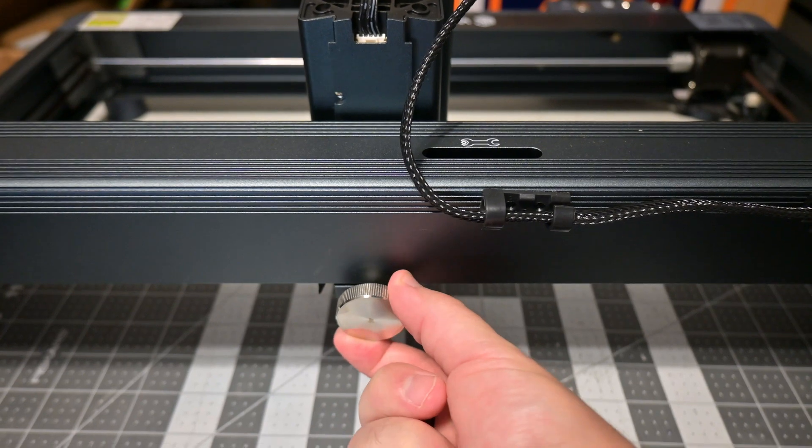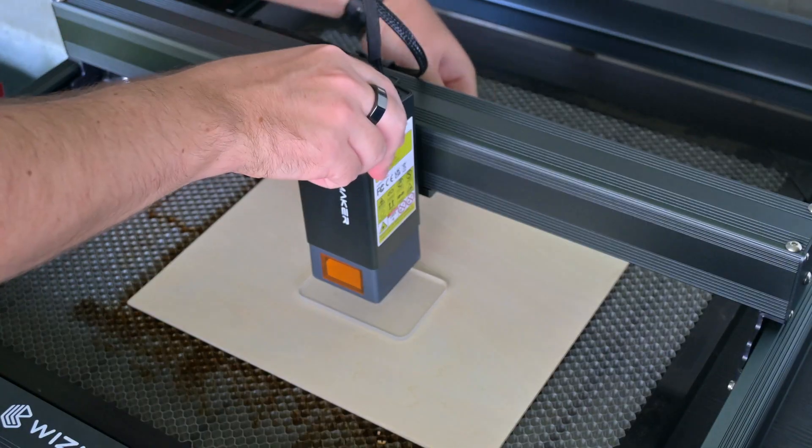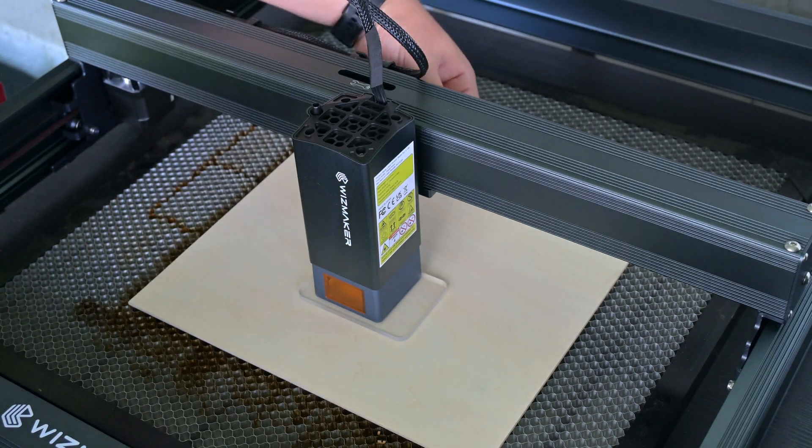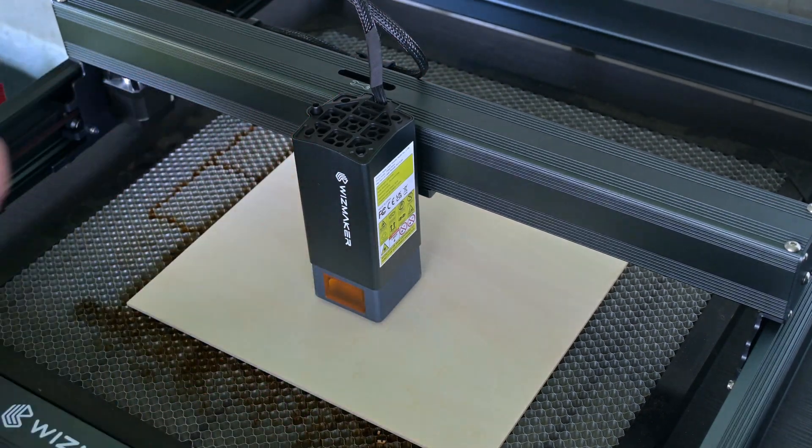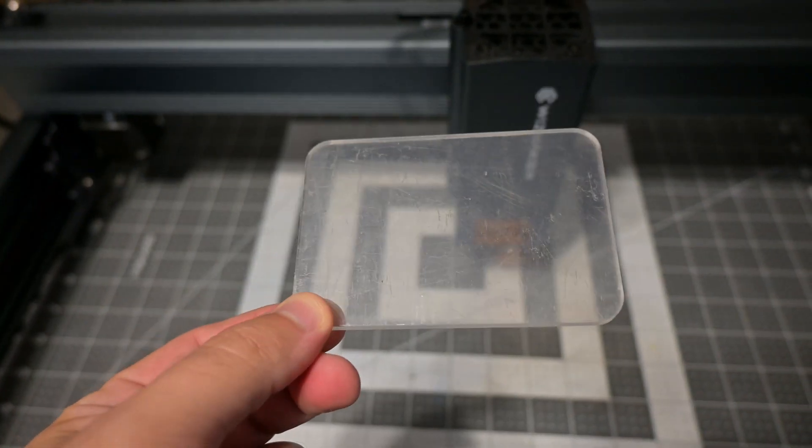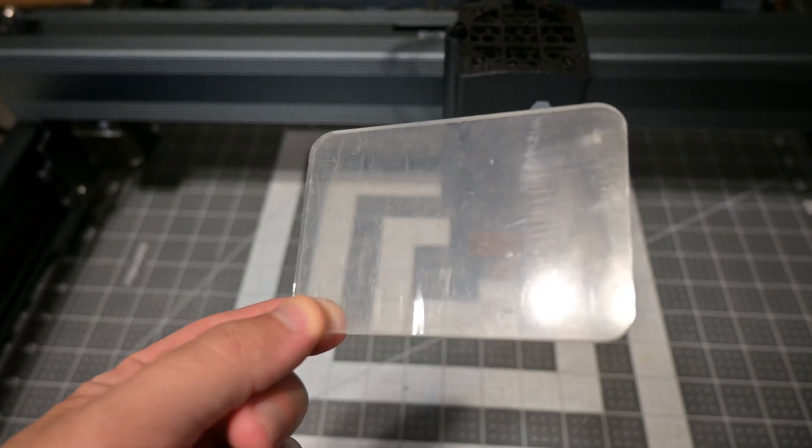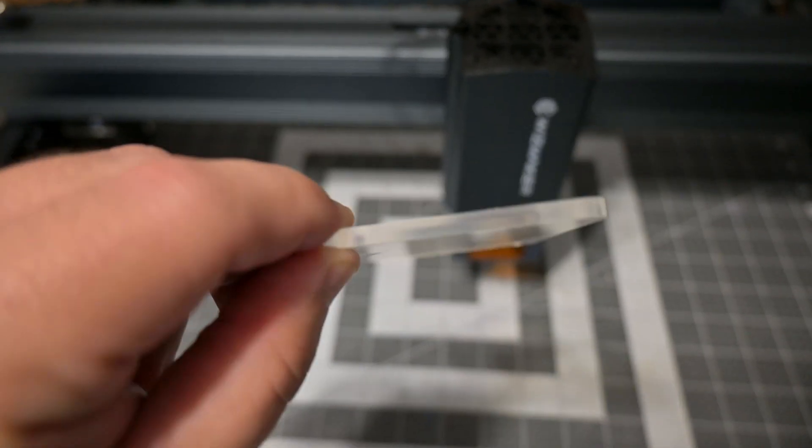The laser module is held into the x-axis with a single knob that makes it easy to adjust. Focus adjustment is done using the provided focusing spacer. Simply place the focus spacer onto your material, loosen the knob, slide the laser module down onto the spacer, and tighten the knob. It works well enough, but I do wish the focusing spacer was built into the machine. It's something that you'll need to keep track of, and if you lose it, you'll have to find another 4mm replacement.